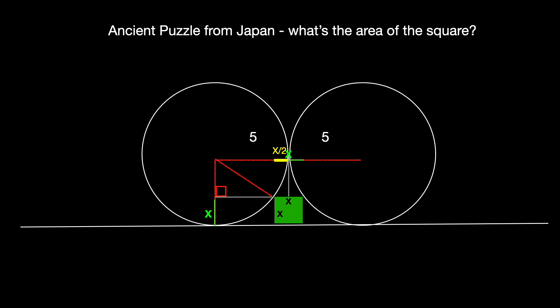Now we can finally tell what the lengths of these two legs are. We can see that the vertical leg of the triangle must have length 5 minus x and the horizontal leg of the triangle must be 5 minus x over 2.